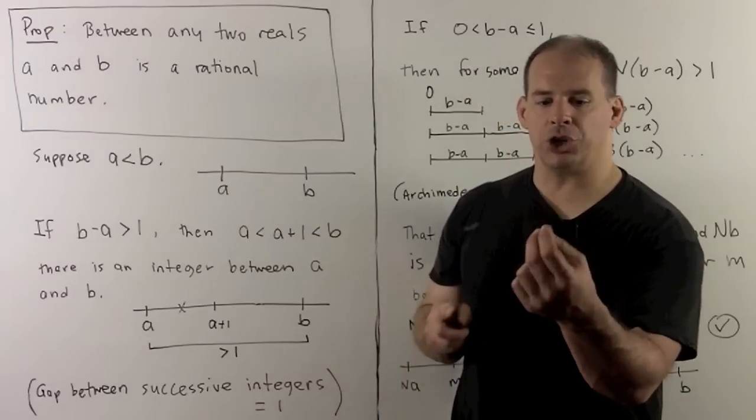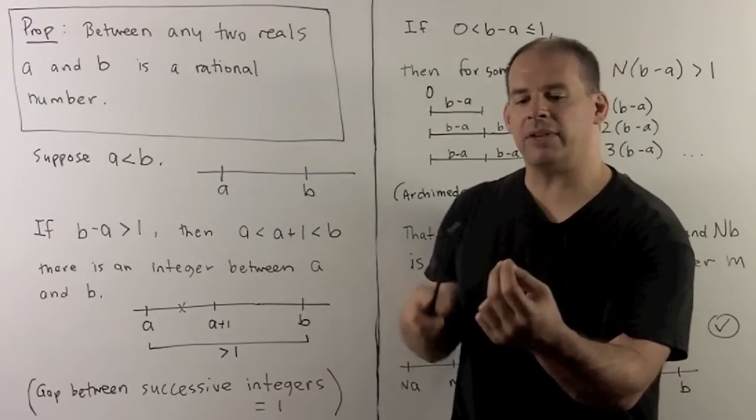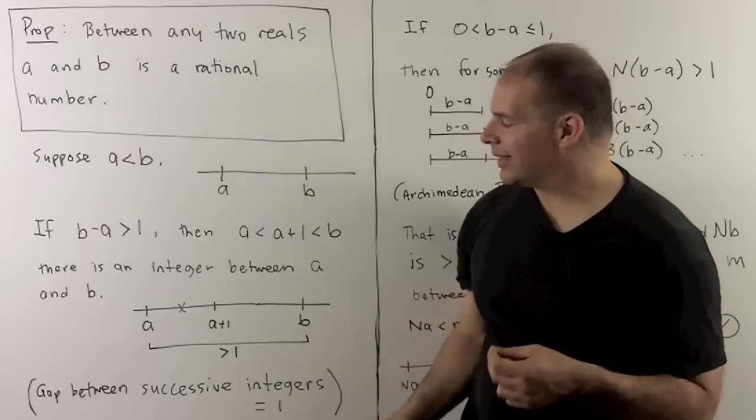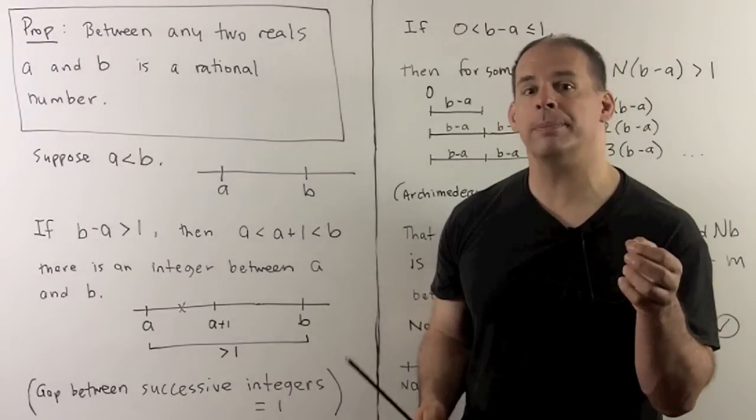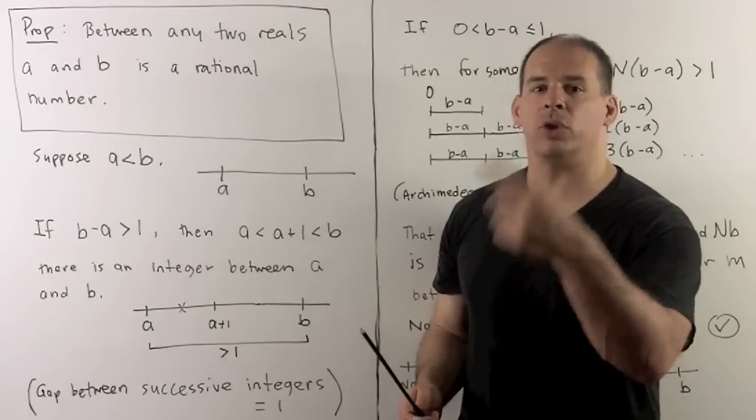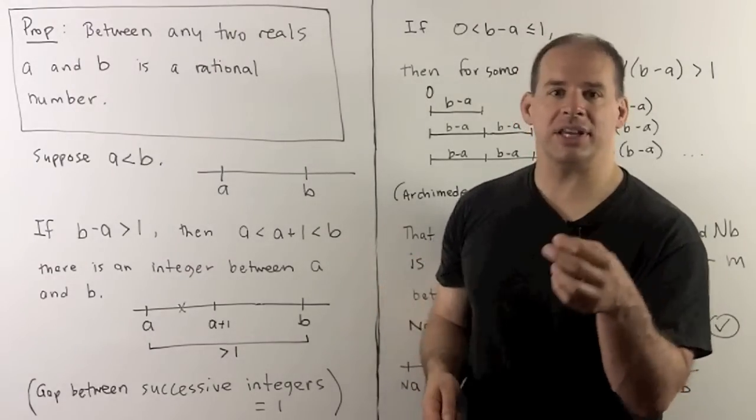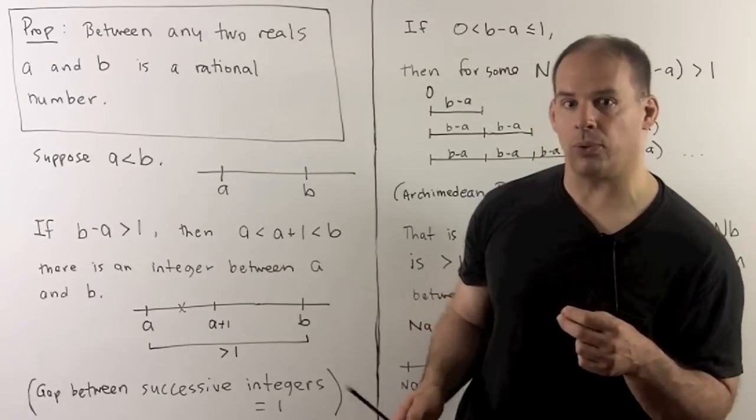Well, consider the integers. To get the positive integers, I start at zero and continually increment up by one. For the negative integers, we start zero and continually decrement by one. Now, that means the gap between any two successive integers has length precisely one. So, if I have an interval whose length is strictly bigger than one, then that interval has to contain some integer. And that's going to be the rational number that we're looking for.